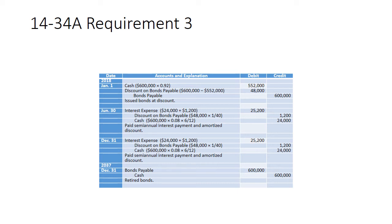We credit bonds payable for the face value of $600,000. The difference — $48,000 — which is really caused by interest rate differences, is debited to a contra liability account called discount on bonds payable. We aren't allowed to put all of that in interest expense on the day we sell the bond. The rule says spread it out over the life of the bond. So at each interest payment, you'll recognize a portion of that $48,000 as interest expense. On the balance sheet, the discount on bonds payable account reduces the bonds payable balance.